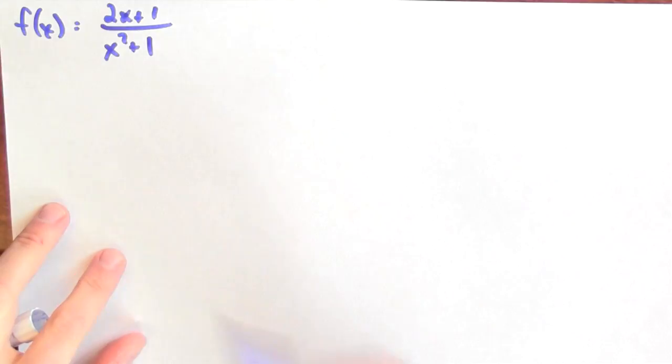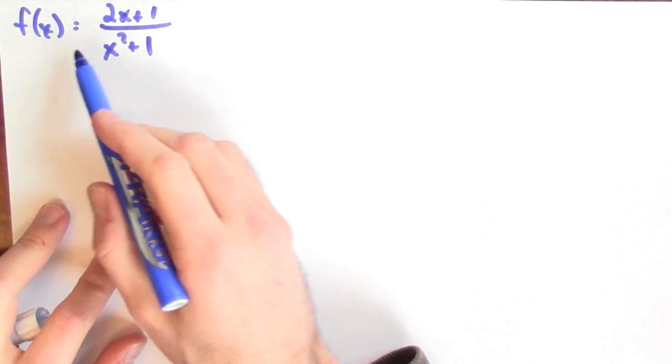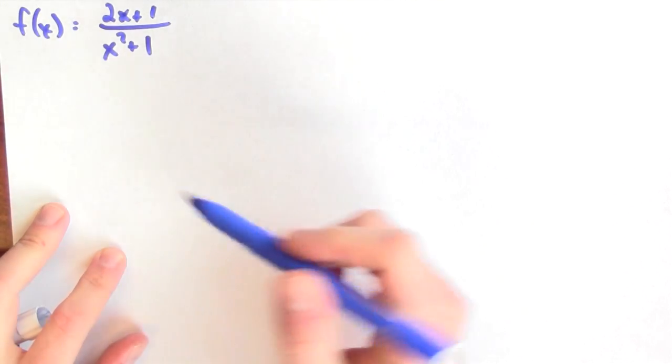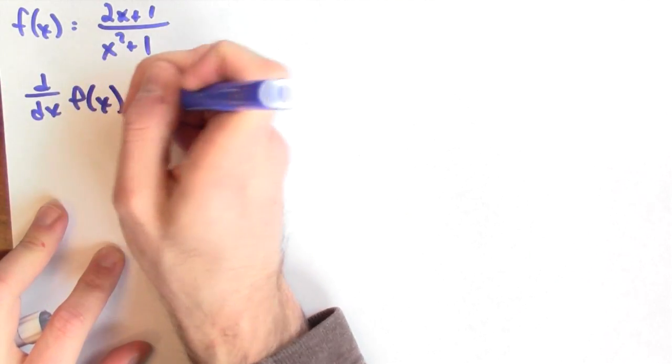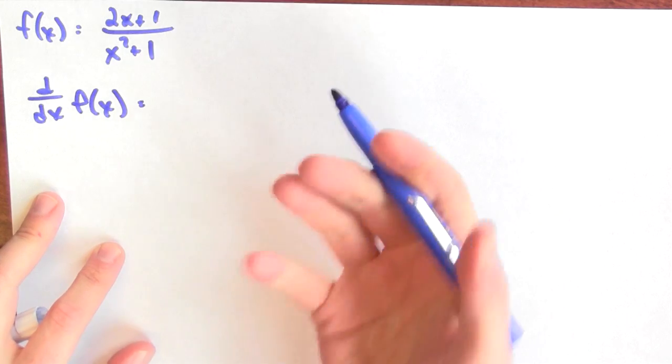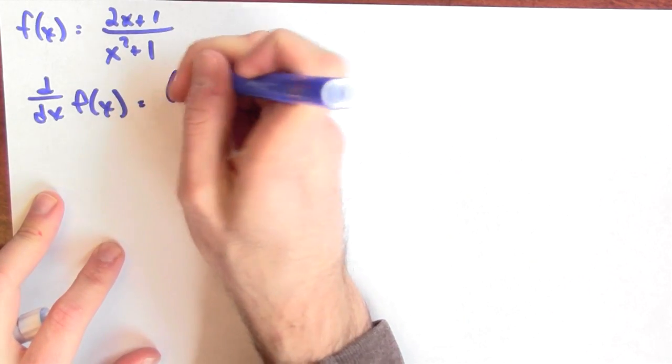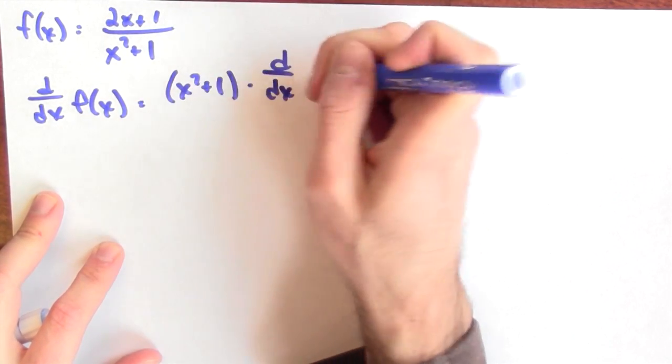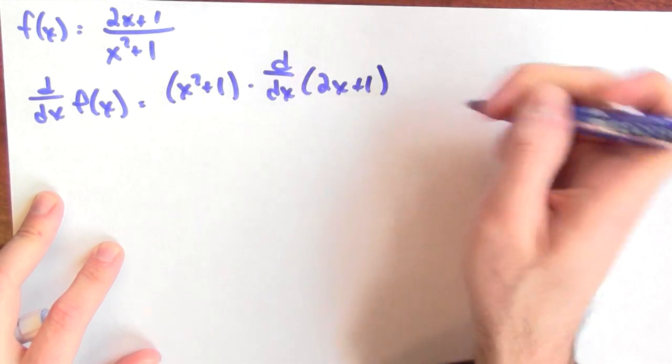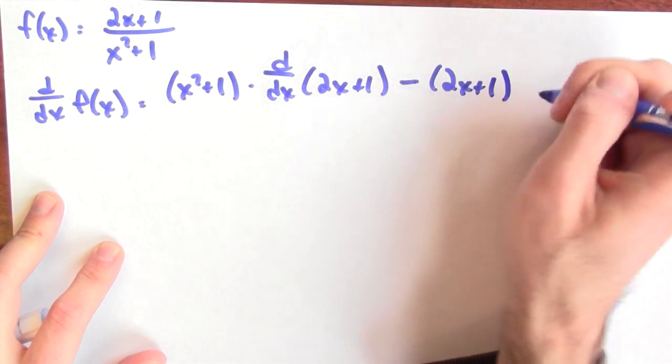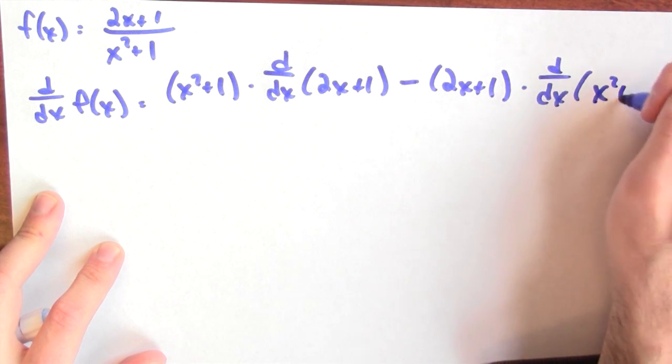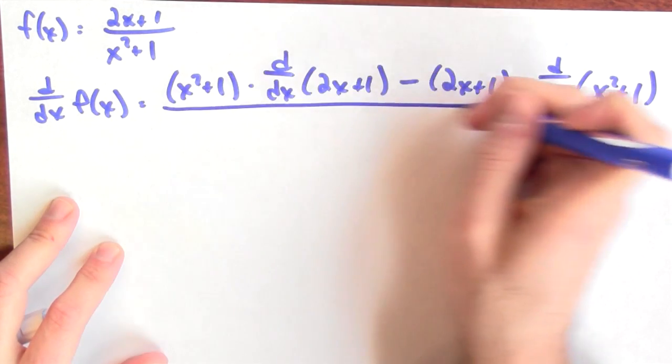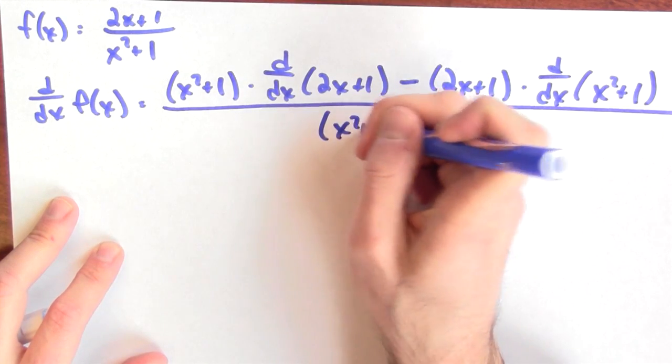Let's use the quotient rule to differentiate the function that we saw earlier. The function we were thinking about is f of x equals 2x plus 1 over x squared plus 1. I want to calculate the derivative of that with respect to x. Now, the derivative of this quotient is given to us by the quotient rule. It's just the denominator times the derivative of the numerator minus the numerator times the derivative of the denominator, and it's all divided by the denominator squared.